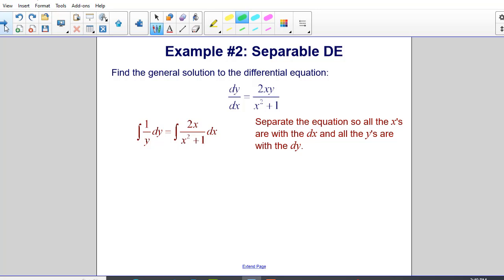We are going to separate the equation so all the x's are with the dx and all the y's are with dy. What I did here was I multiplied both sides by dx, and of course on the left side it cancels but on the right side I have my dx. And I divide both sides by y, and that is how I get my one over y on the left side and of course it cancels on the right side.